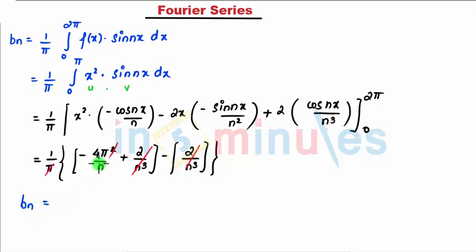bn as minus 4π by n. So after substituting in my series, I can write as: